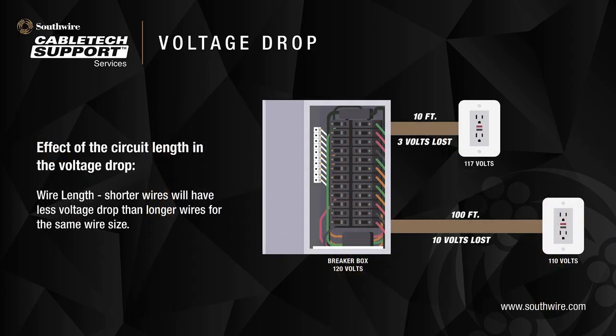The effect of circuit length on voltage drop: shorter wires will have less voltage drop than longer wires for the same wire size. For the same wire size, in a circuit length of 10 feet the voltage drop will be 3 volts, but at 100 feet of length the voltage drop will be 10 volts.